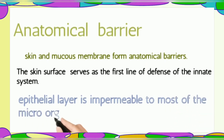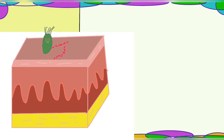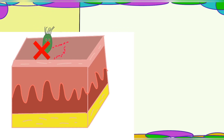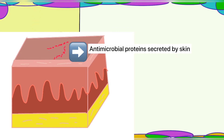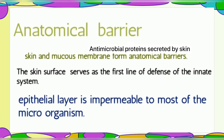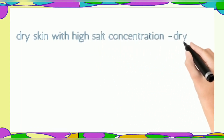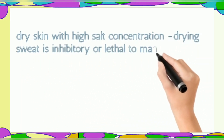Skin is considered the largest organ of the body and acts as a physical barrier. The epithelial cells of the skin are impermeable to most foreign agents. This is why the skin surface serves as the first line of defense of the innate immune system.